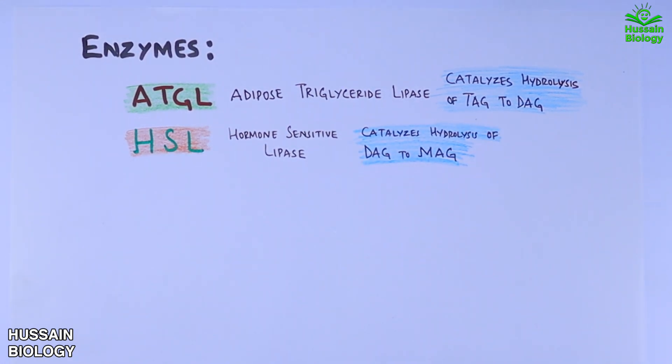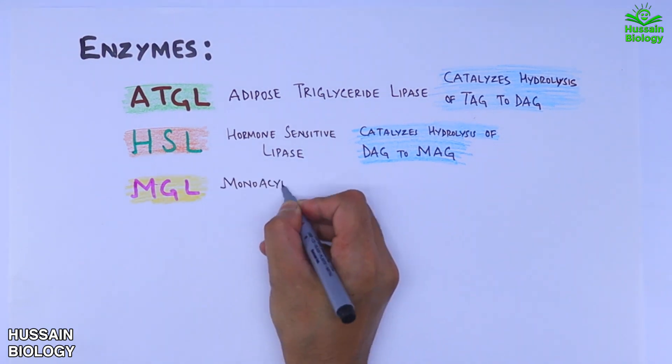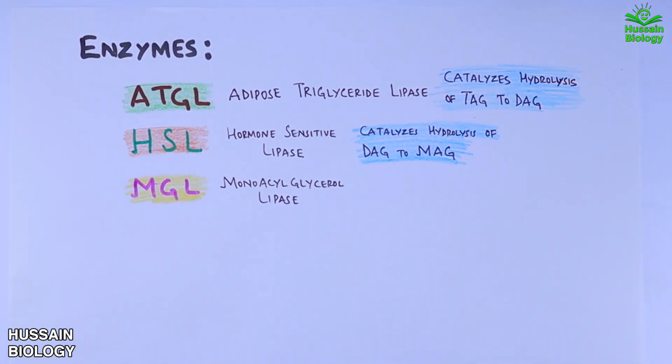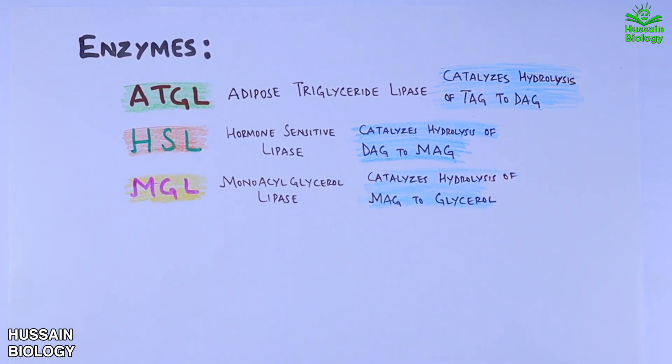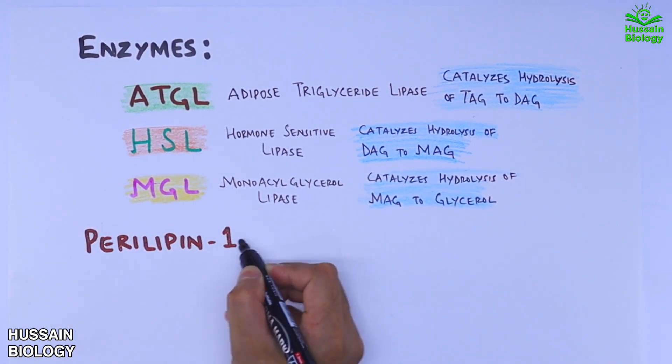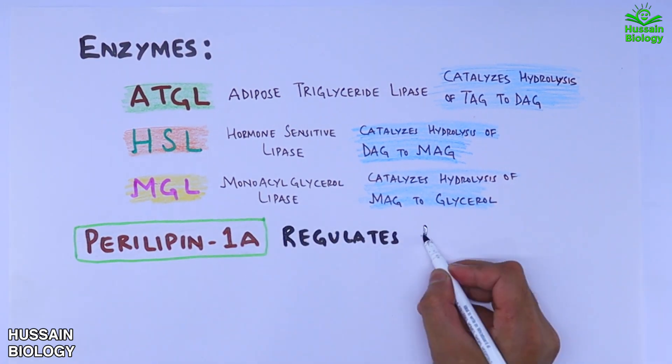Then we have the third enzyme, monoacylglycerol lipase. It catalyzes the hydrolysis of monoacylglycerol into glycerol. And then there is one important protein, perilipin 1A protein, which regulates the lipolysis pathway.